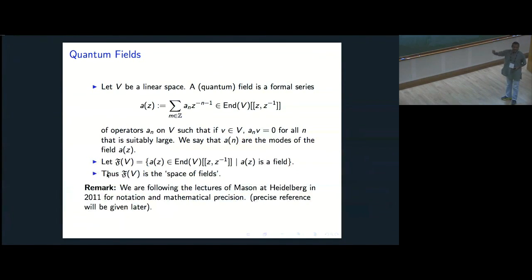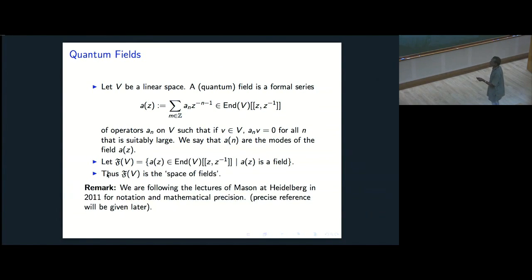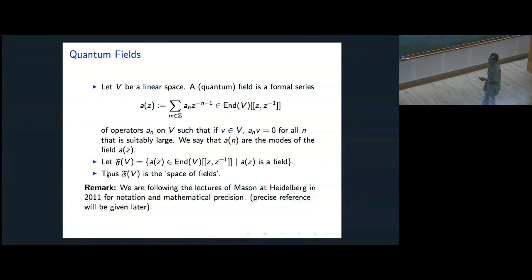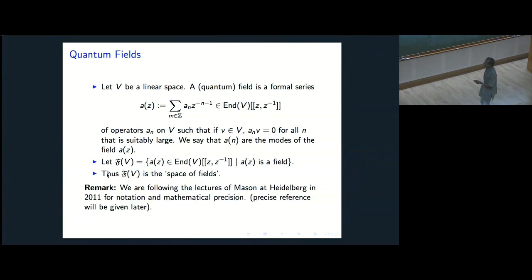Don't be scared — this is just to tell you about quantum fields. Let V be some linear space. A quantum field is a formal power series, so you don't worry about convergence. A(Z) is just a sum over A_n, and remember this mode expansion: it is Z to the power minus N minus 1, so N goes with a negative power, positive N, up to that shift.